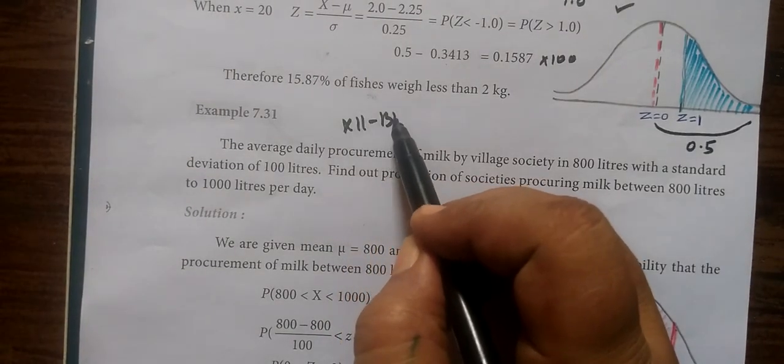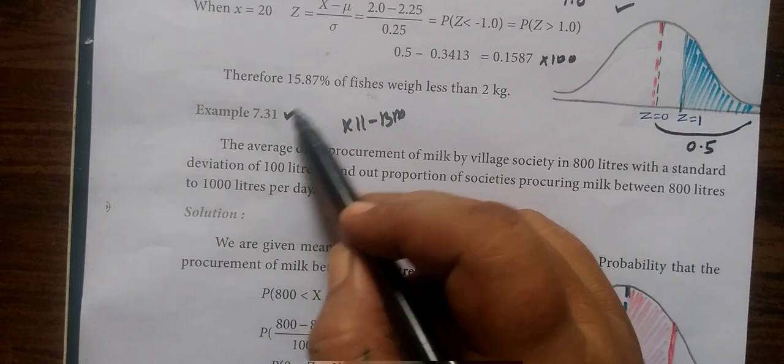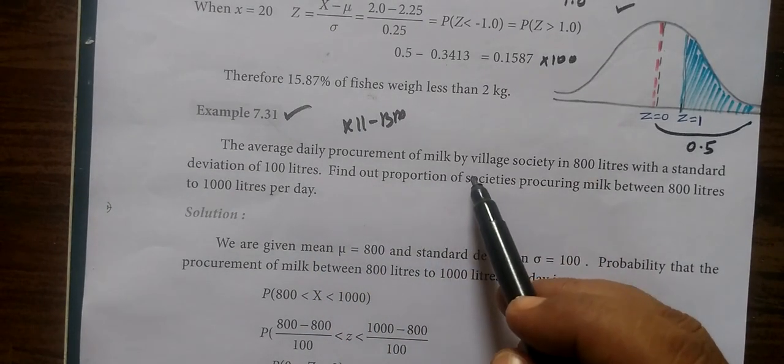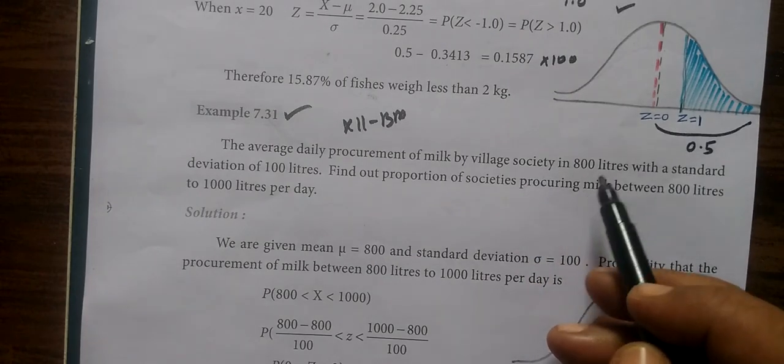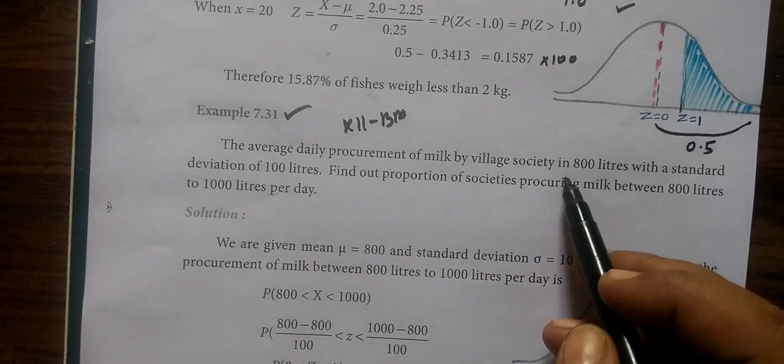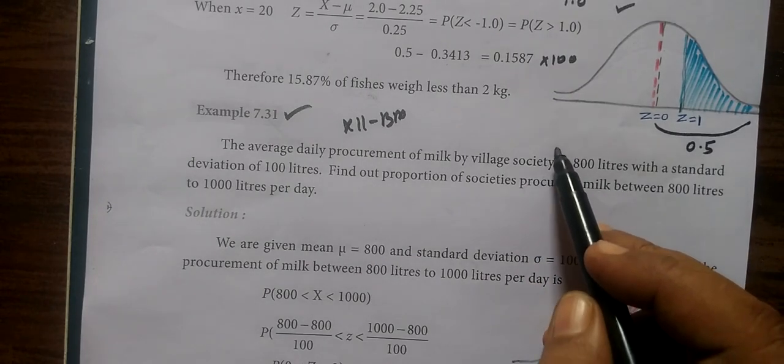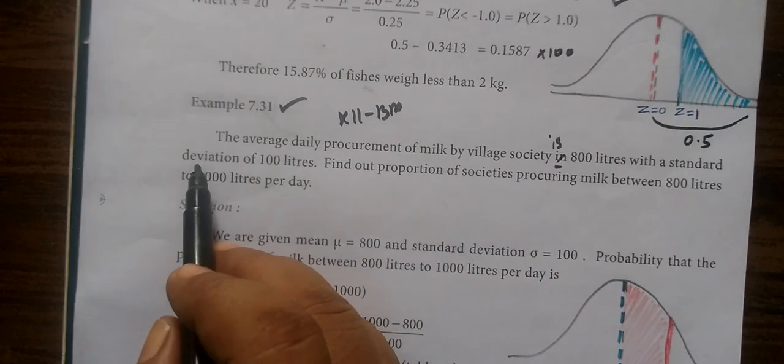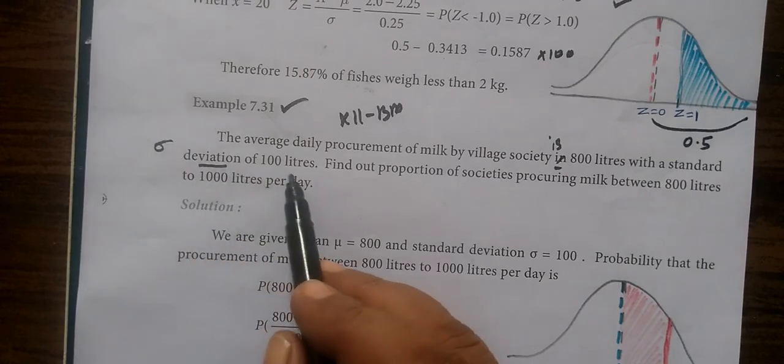So, 12th businessman. This is the last example 7.31. The average daily procurement of milk by village society is 800 liters with standard deviation of 100.